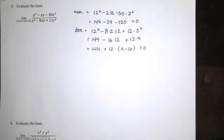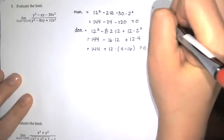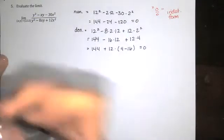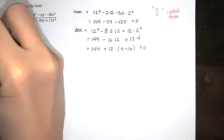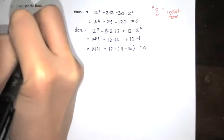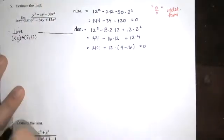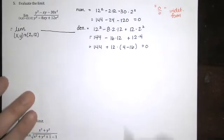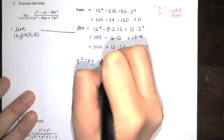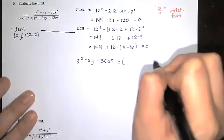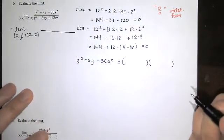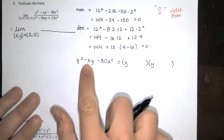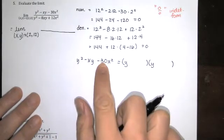So I imagine we're going to have to factor and reduce. Okay. So I have the limit as x, y approaches 2, 12 of this expression over here. And basically, you just want to factor that numerator and denominator as much as possible. I've got y squared minus xy minus 30x squared. And you want to factor that the same way that you would factor in algebra class.